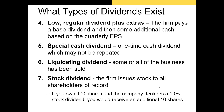We sometimes see the special cash dividend — these are one-time cash dividends when the firm has excess cash and very few good capital budgeting projects. The firm, rather than letting that cash sit on the balance sheet, will just return it to shareholders because they don't have any better opportunities right now.